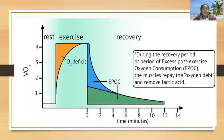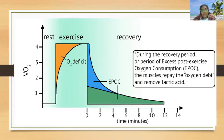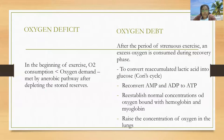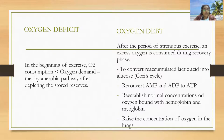A graph shows maximum oxygen uptake versus time, with two concepts explained: oxygen deficit and oxygen debt. At the beginning of exercise, there is an increase in oxygen demand greater than oxygen consumption, which is initially met by depleting stored reserves. When demand further increases, it is met by the anaerobic pathway — this is the oxygen deficit.